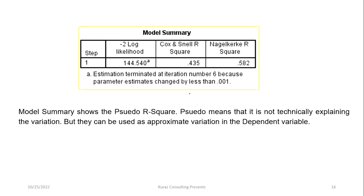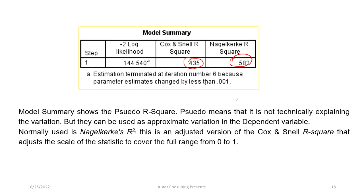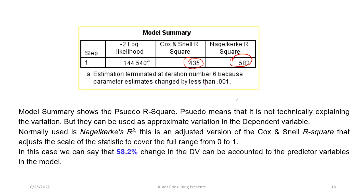The model summary shows the pseudo R-square, including Cox and Snell R-square and Nagelkerke R-square. The pseudo R-square is not technically a measure of explained variation, but it can be used as an approximation of variation in the dependent variable. The Nagelkerke R-square is the preferred measure — it is an adjusted version of Cox and Snell R-square that scales the statistic to cover the full range from 0 to 1. In this case, we can say that 58.2% of the change in the dependent variable is accounted for by monthly income, value-added service, and employment status.